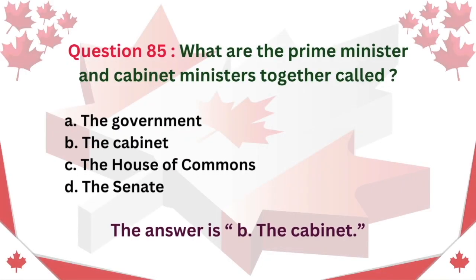Question 85: What are the prime minister and cabinet ministers together called? A. The government. B. The cabinet. C. The House of Commons. D. The Senate. The answer is B: The cabinet.